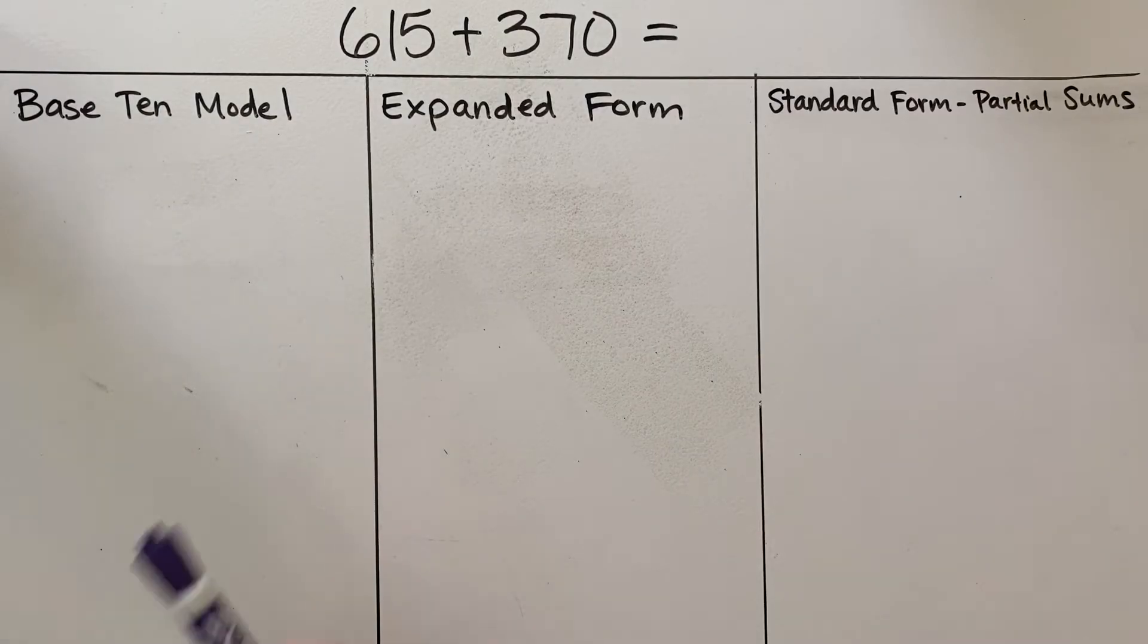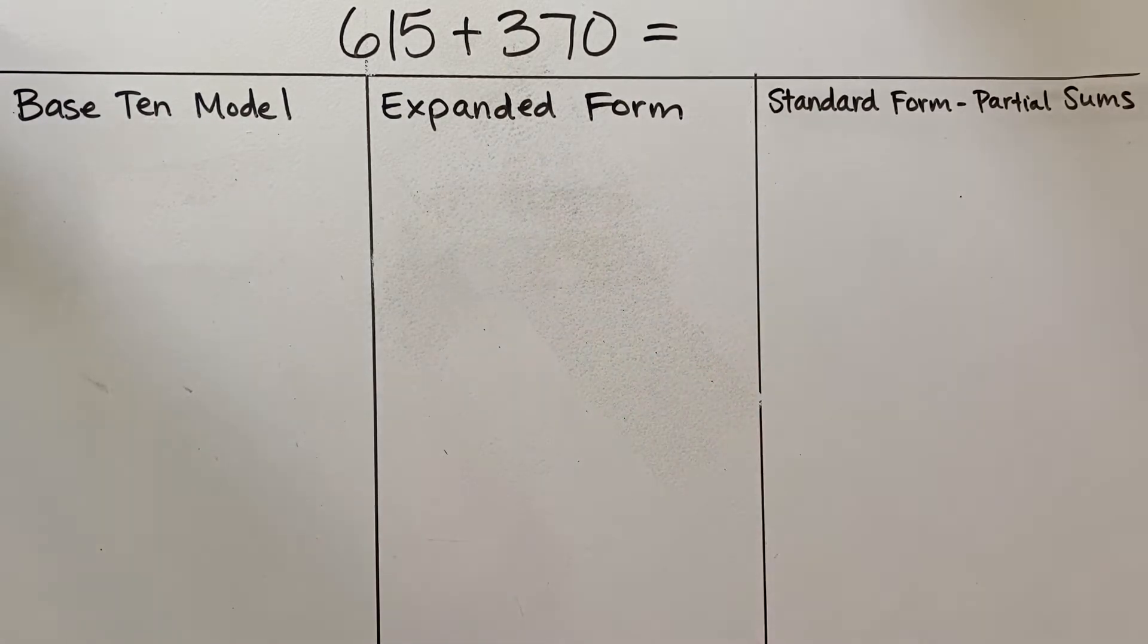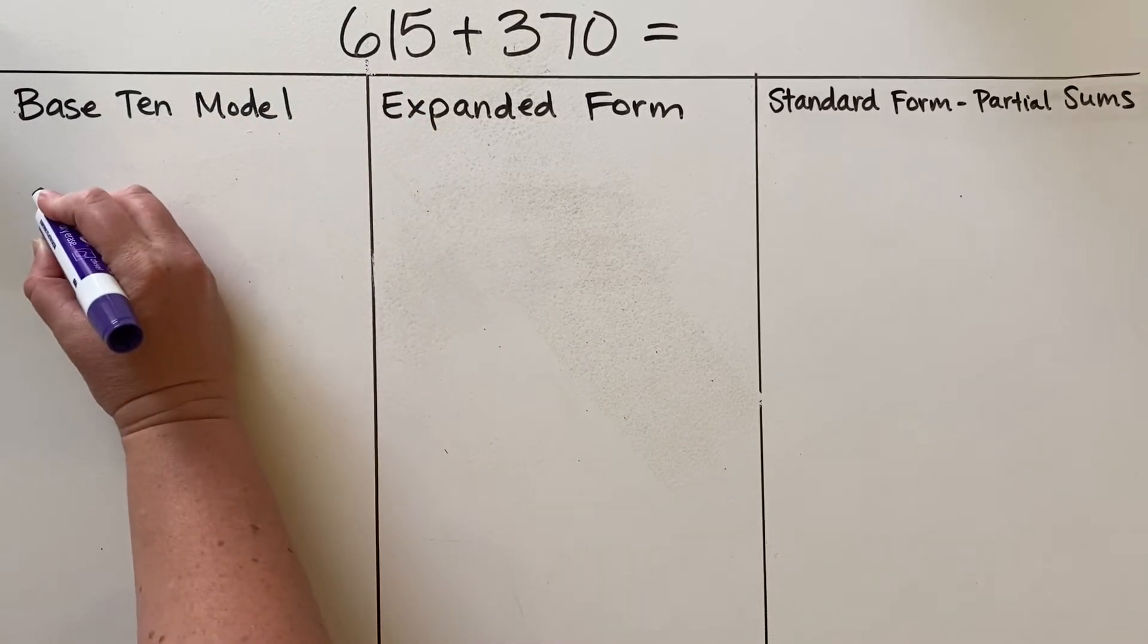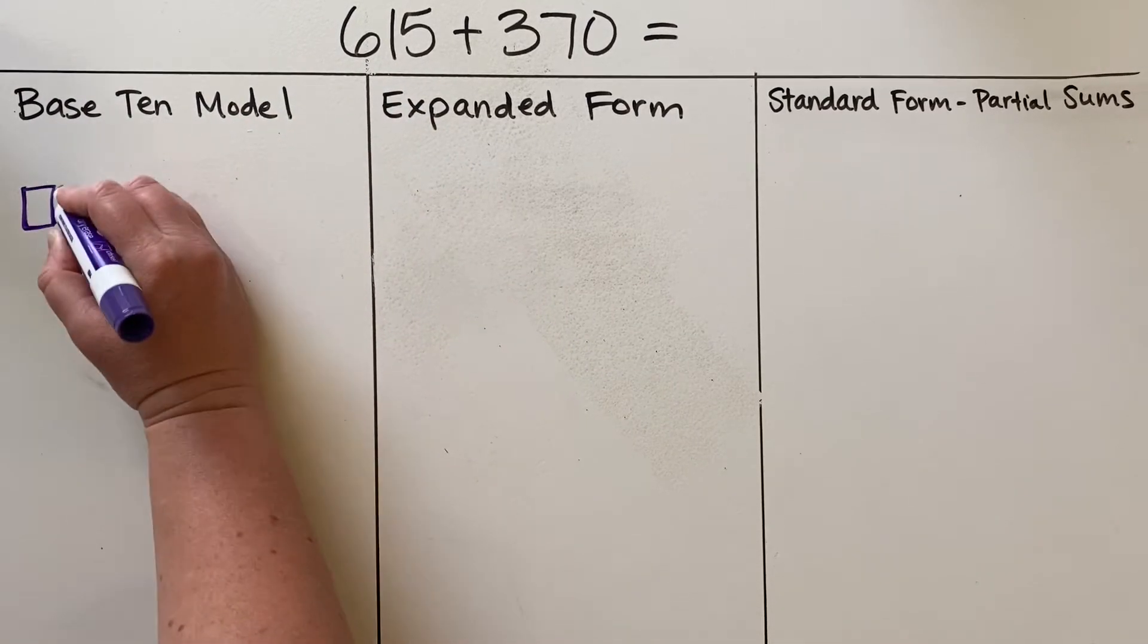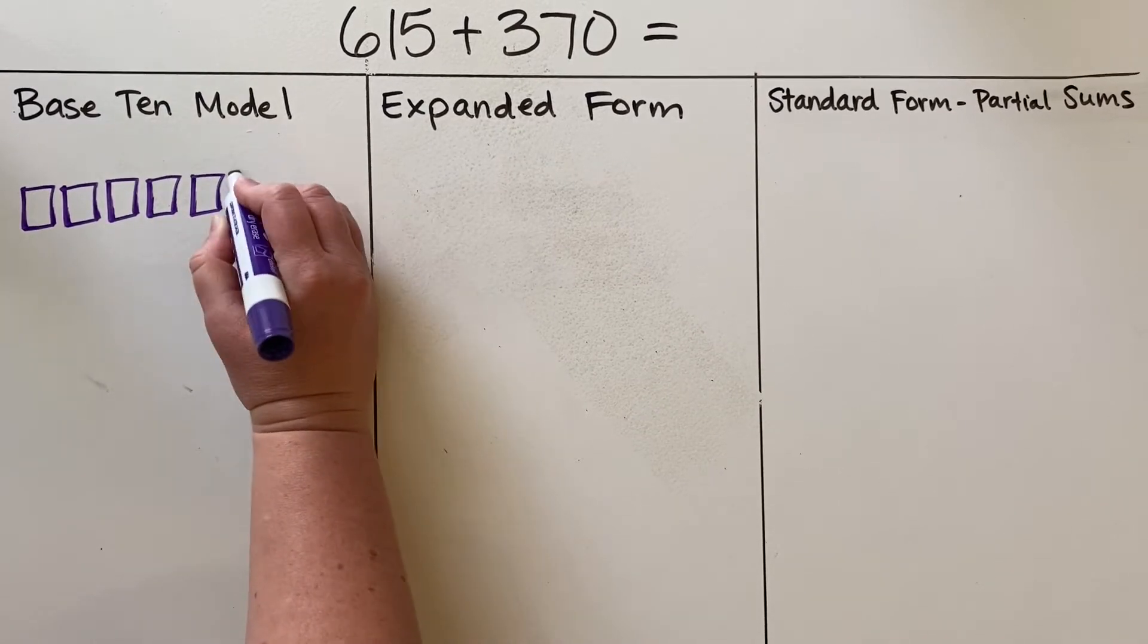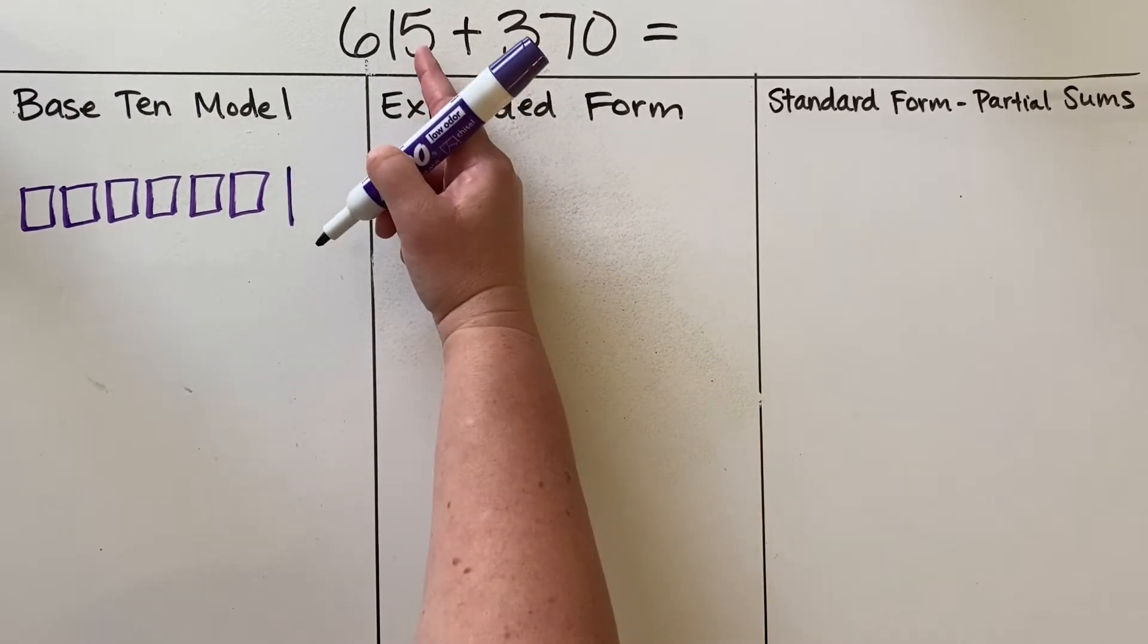it in three ways: a base 10 model, expanded form, and also in standard form using partial sums. So our base 10 model, we are going to use the box, line, dots to draw the model. And so for 615, my first addend, I'm going to have six hundreds—one, two, three, four, five, six—there's one 10, and five ones.